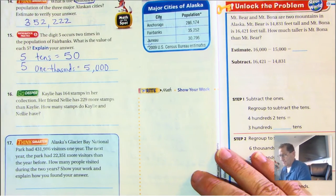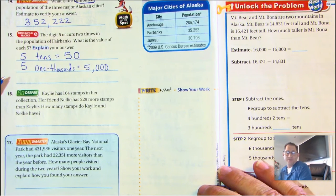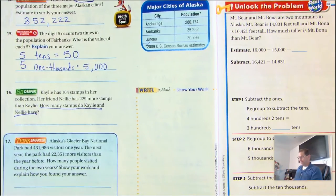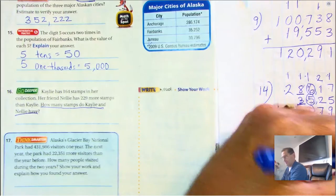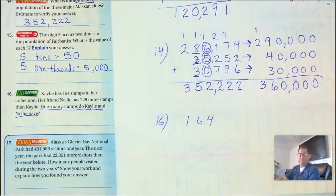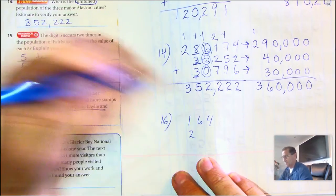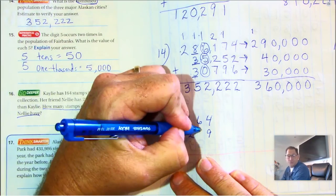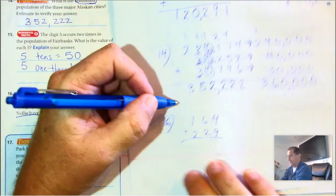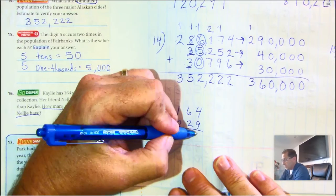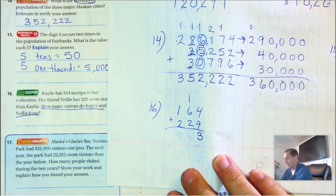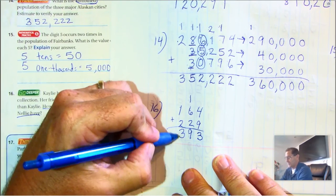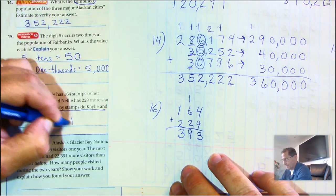Number sixteen: Kaylee has 164 stamps. Her friend Nellie has 229 more stamps than Kaylee. How many stamps do they both have? Lining up right to left: nine, two, two. Nine ones plus four ones is thirteen ones — rename as one ten and three ones. Six tens plus two tens is eight tens, plus the regrouped ten is nine tens. Two hundred plus one hundred is three hundred. So Nellie has 393 stamps total.